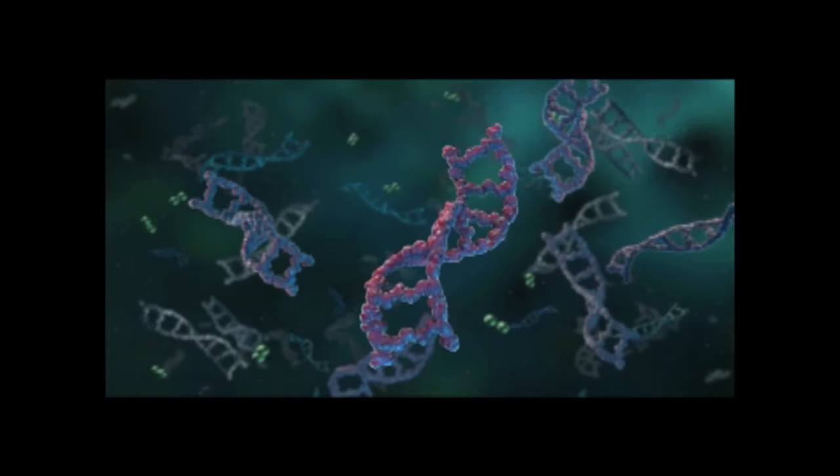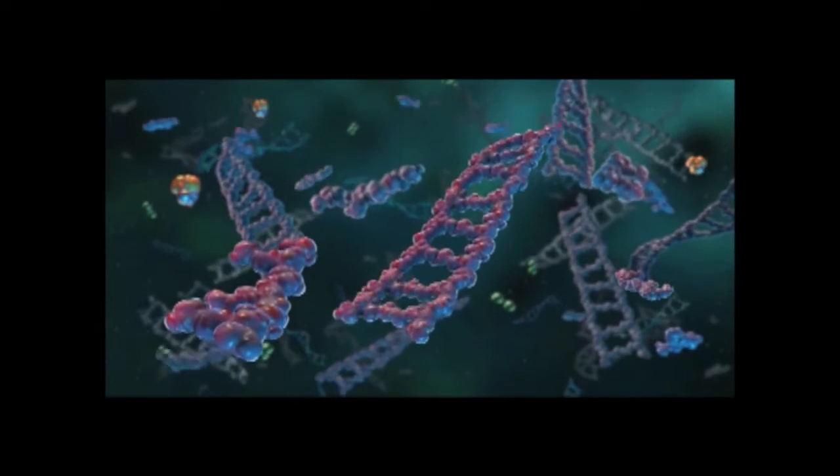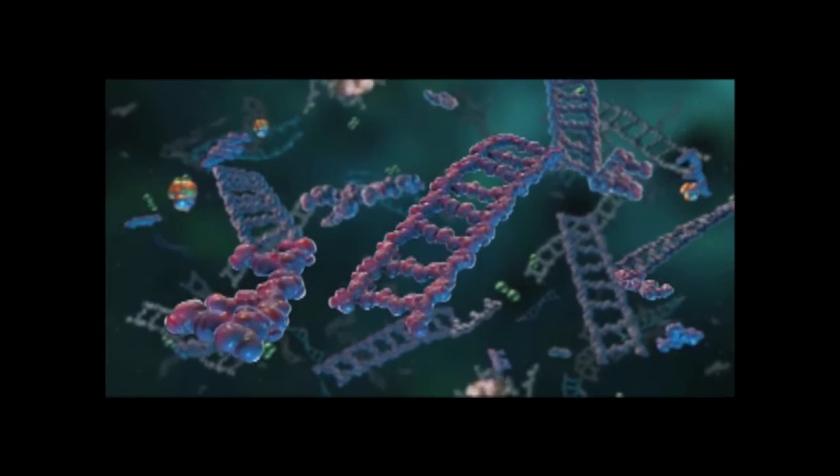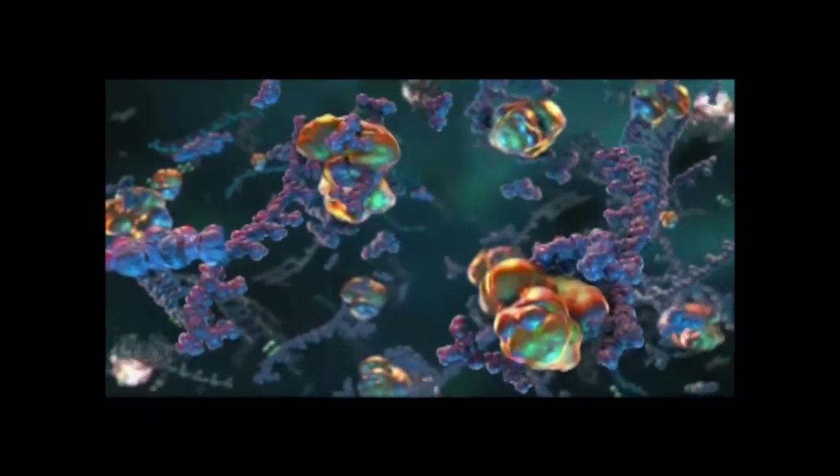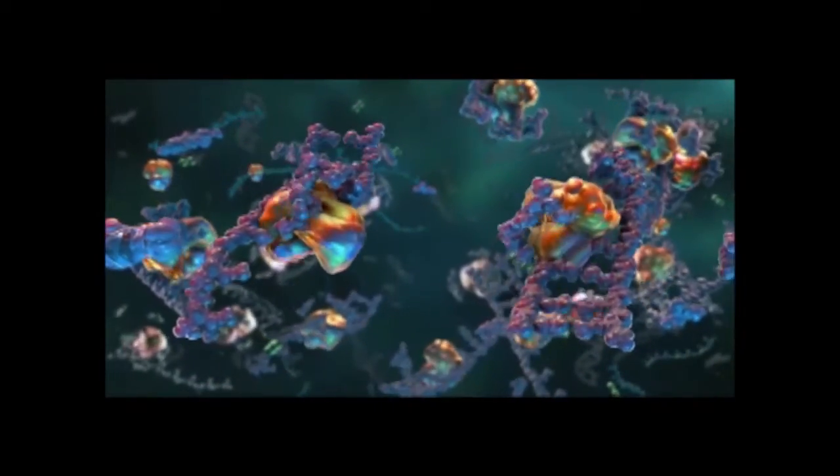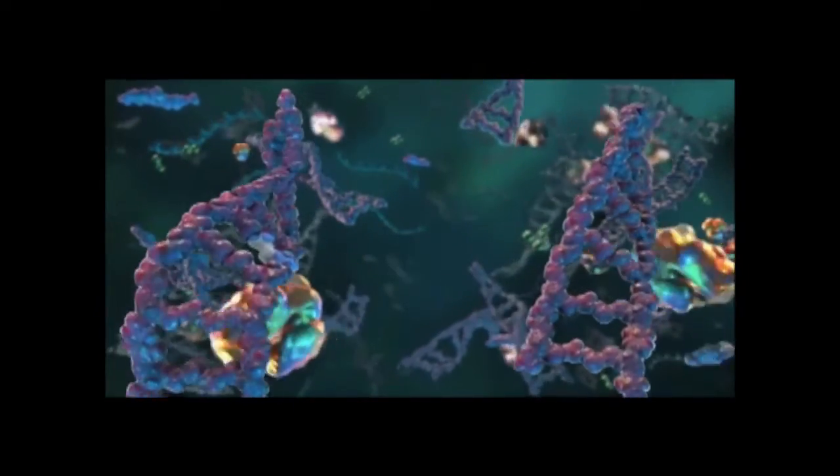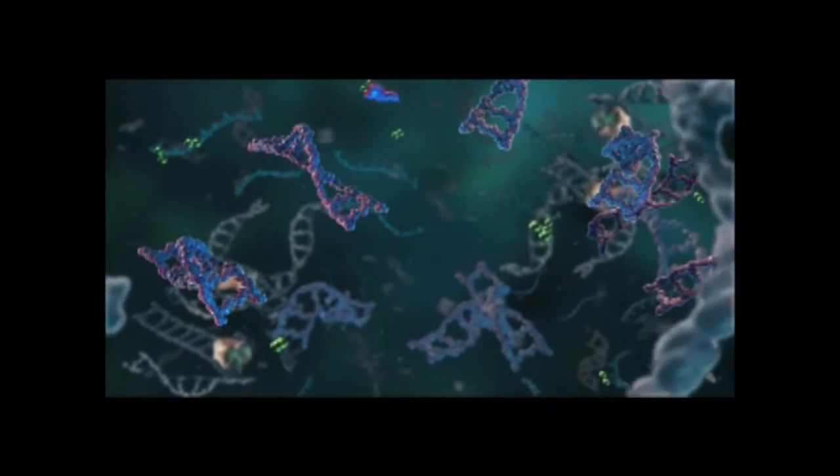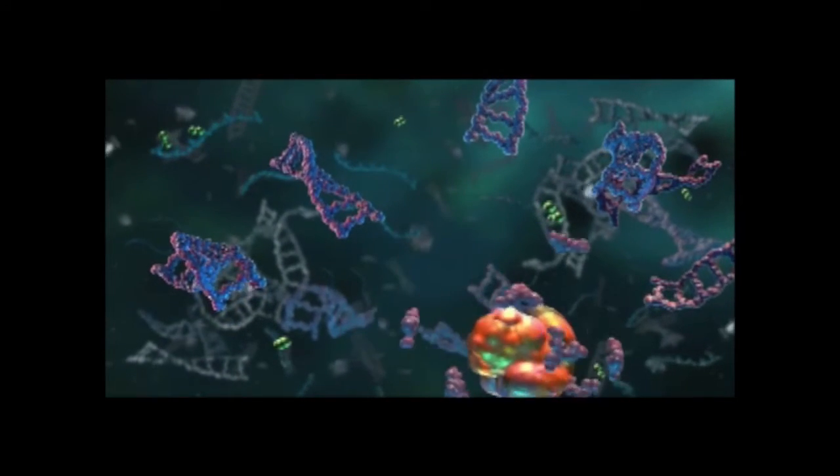Each well of this array is pre-spotted with one pair of second stage PCR primers. These second stage PCR primers are designed to amplify sequences contained within the products from the first stage PCR. This eliminates non-specific products associated with traditional multiplex PCR, because the second stage primers specifically amplify only target DNA.